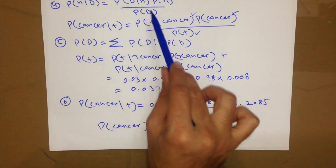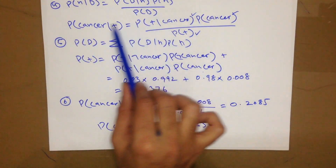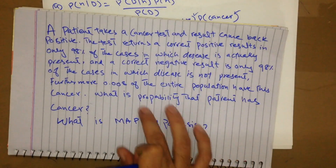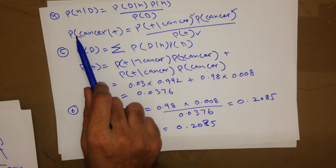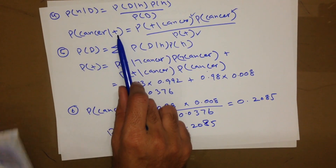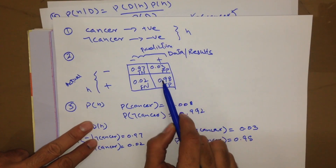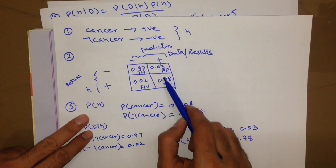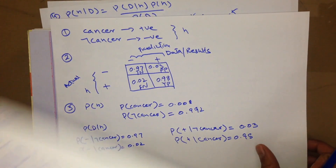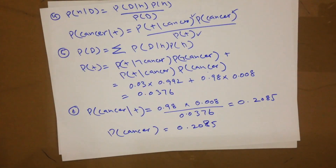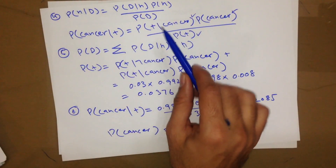We have already calculated the values for P(D), P(H), and P(D|H). As per the question, we need to find out the probability that the patient has cancer. When we need to find out this, we need positive data. For positive data we need to calculate the probability based upon the values in the positive column. We can write it as the probability of cancer given positive data.